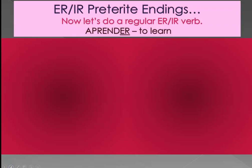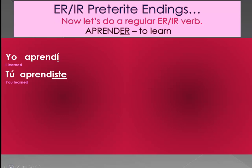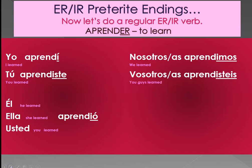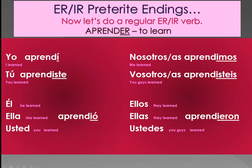ER and IR preterite endings. Aprender, to learn, is our example. Yo aprendí — I learned. Tú aprendiste — you learned. Él/ella/usted aprendió — he, she, or you formal learned. Nosotros o nosotras aprendimos — we learned. Vosotros o vosotras aprendisteis — you guys learned. Ellos/ellas/ustedes aprendieron — they or you guys learned.